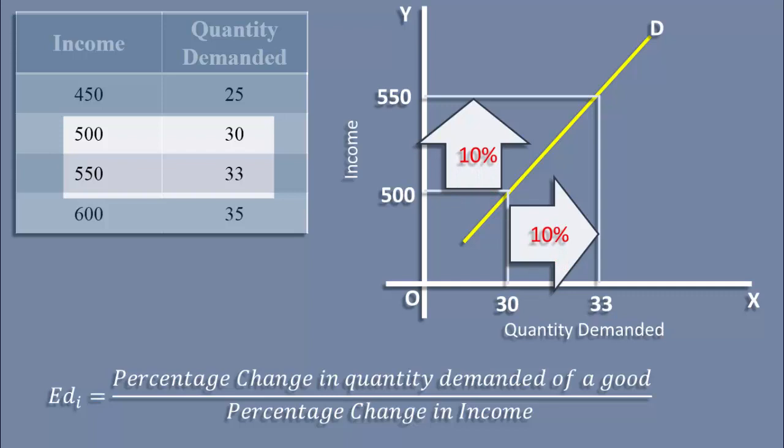Increase in income is 10%, and increase in quantity is also 10%. A proportionate increase in income brings about an exactly equal proportionate increase in quantity. Hence, income elasticity is unitary.